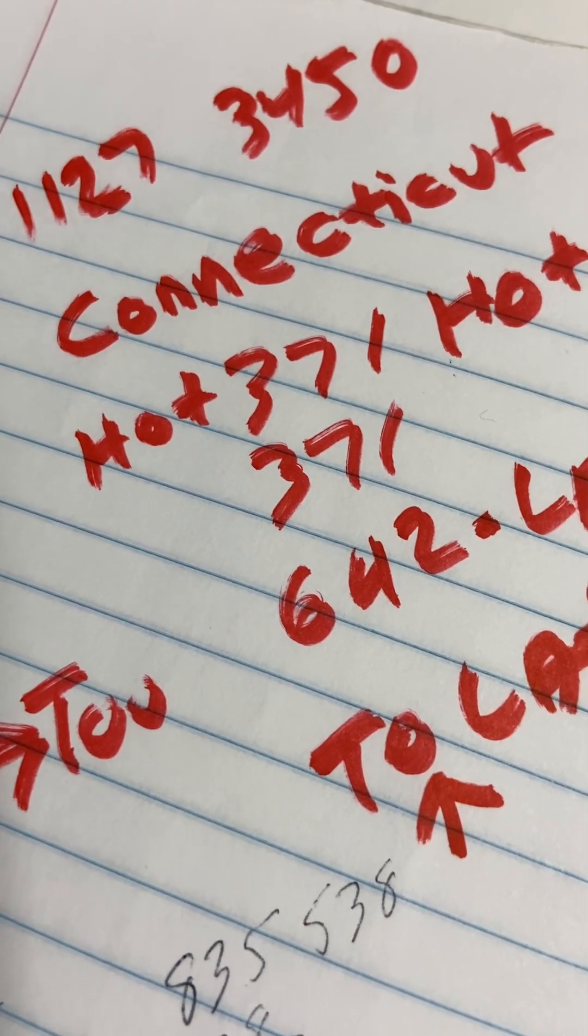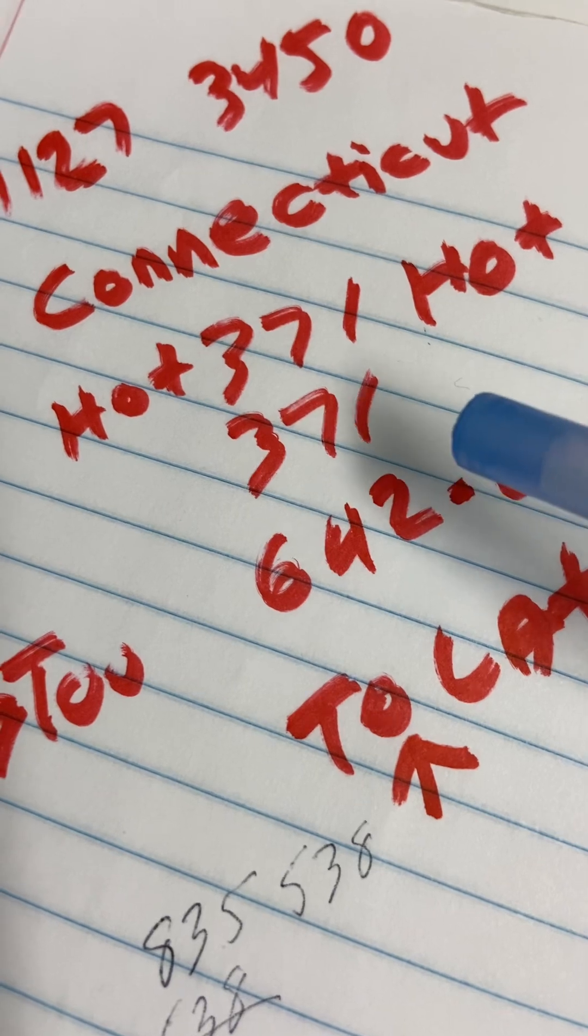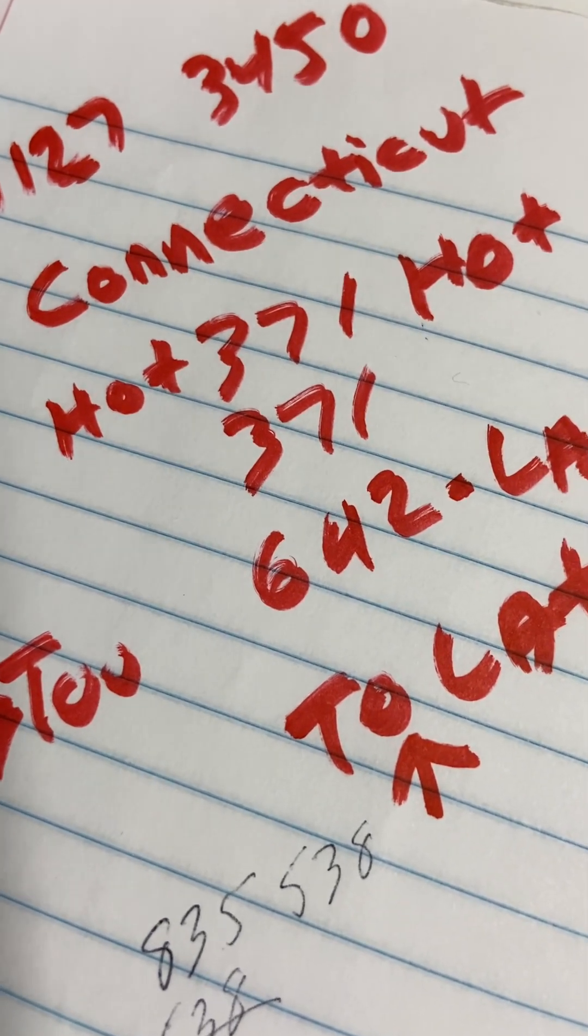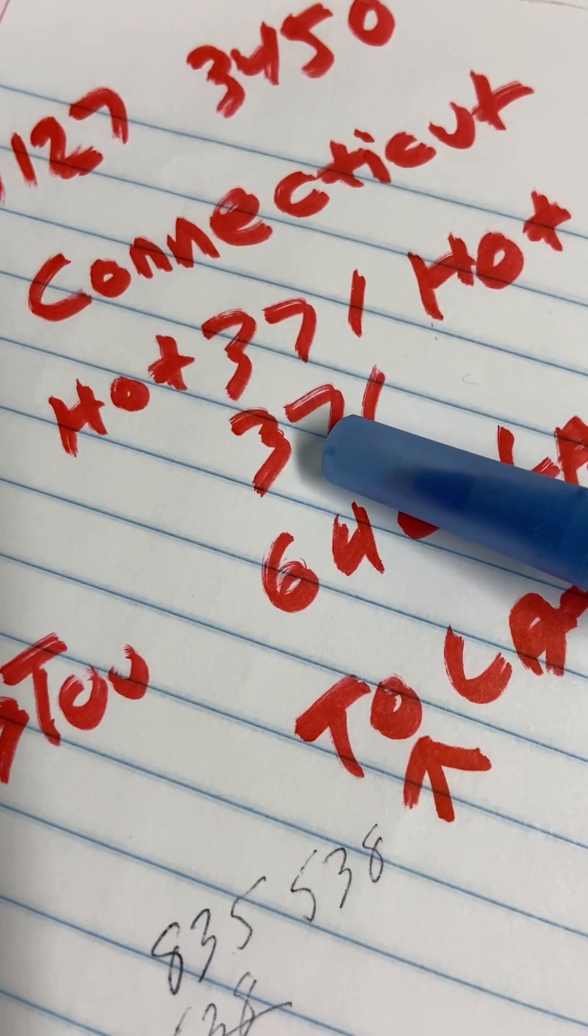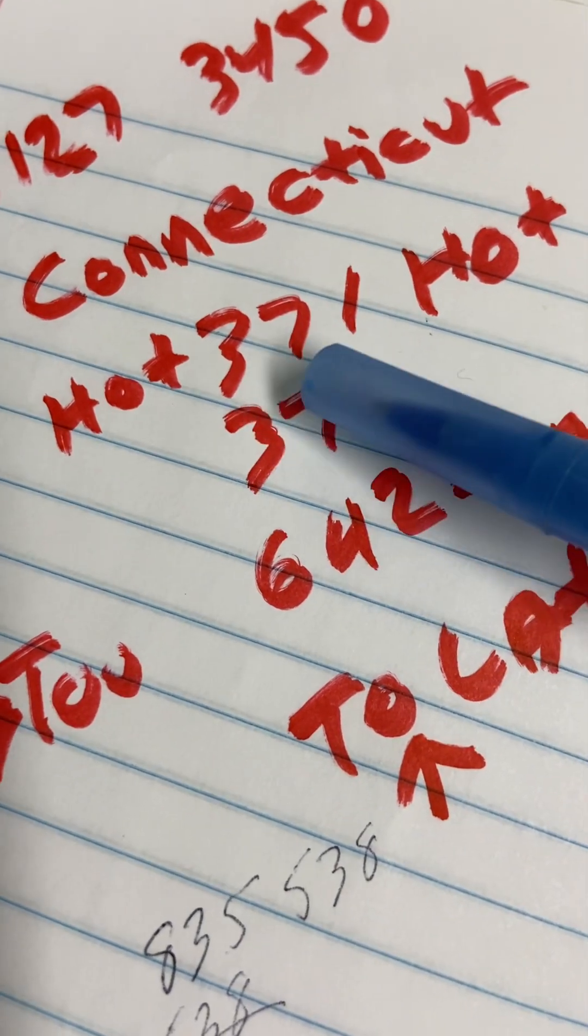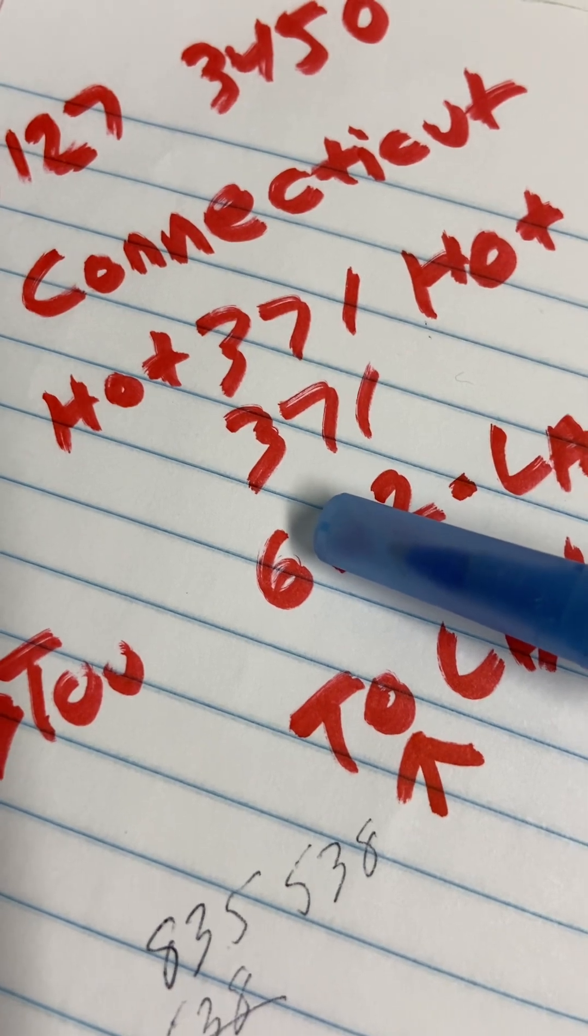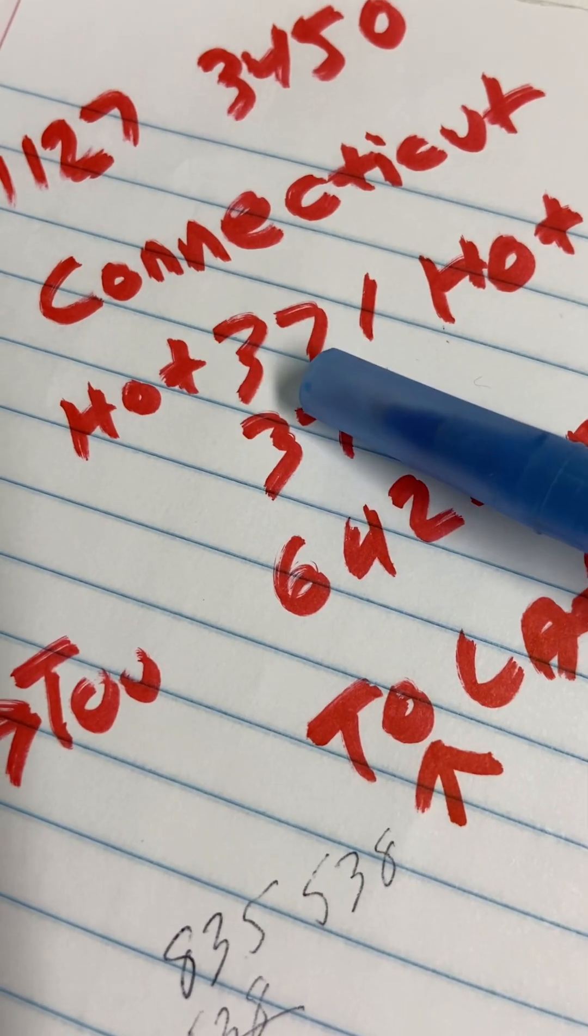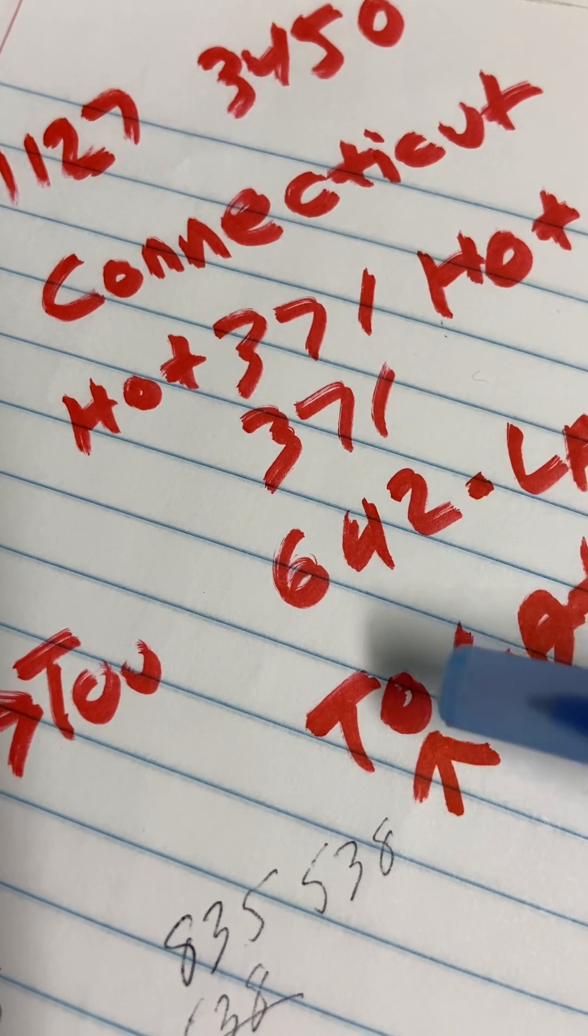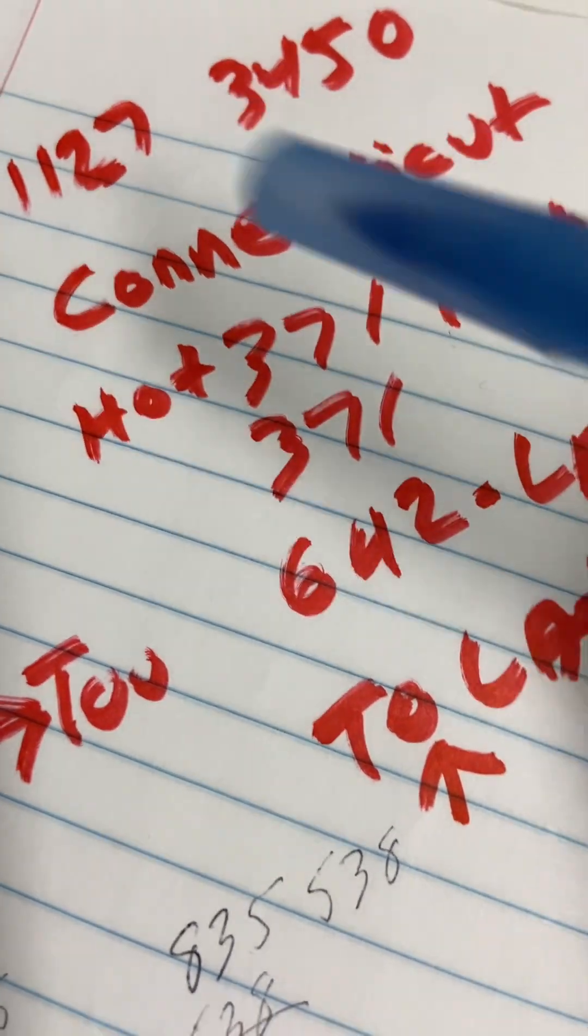Once again, shout out to Connecticut, you had 371. Alright, it's a six-way combination. This is an all odd number, and in and out. This is for Connecticut.